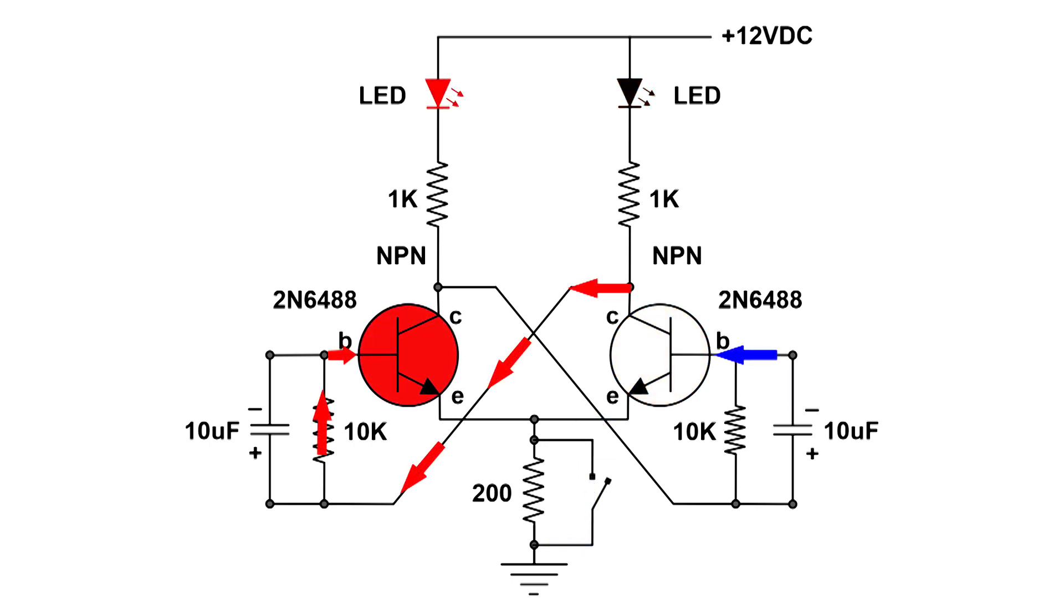That capacitor discharges, putting a negative pulse on the base of that transistor, turning it off. Now we've got positive voltage at the collector that goes over and up the 10k ohm resistor to the base of the left transistor, turning it on. This circuit just flip flops back and forth.